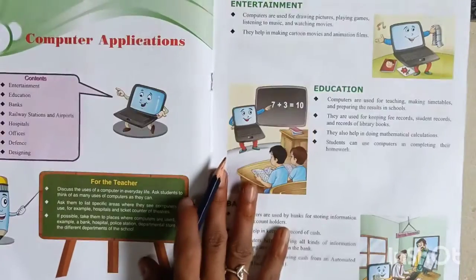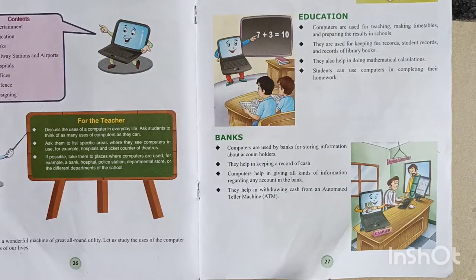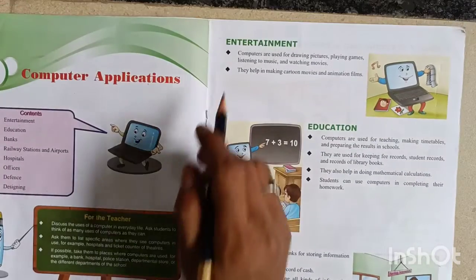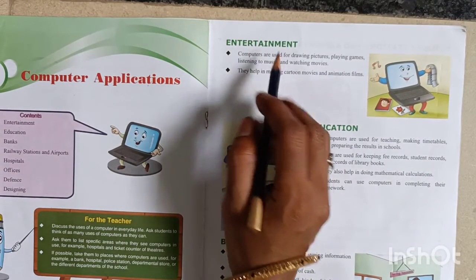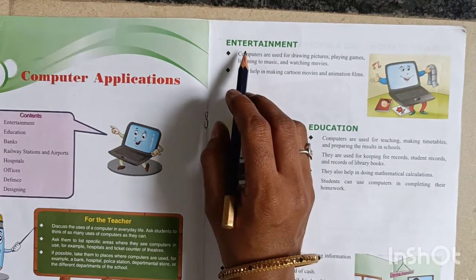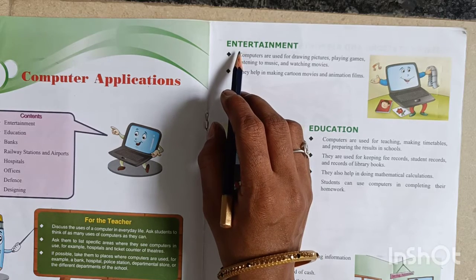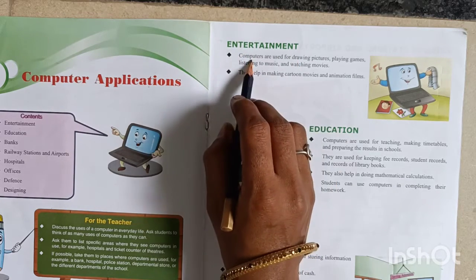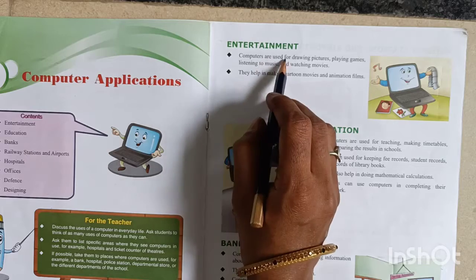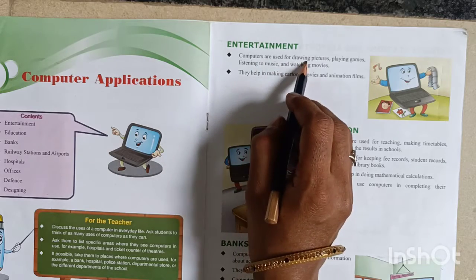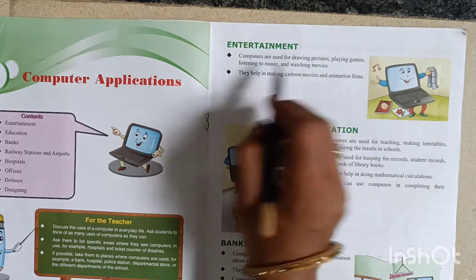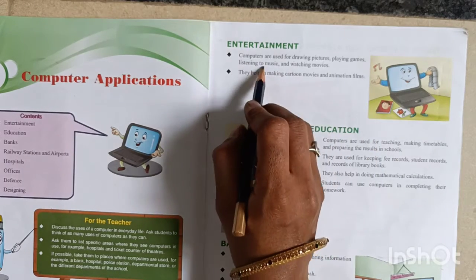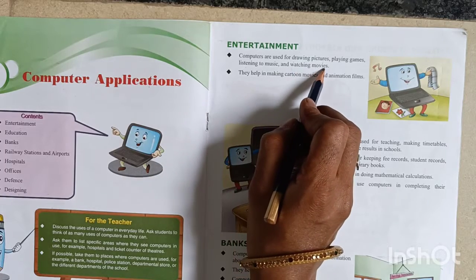Let us study the uses of computers in different areas of our lives. See page number 27. Entertainment — computers are used for drawing pictures, playing games, listening to music, and watching movies.